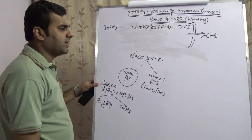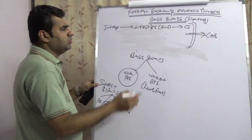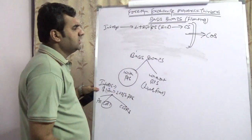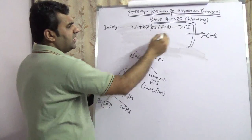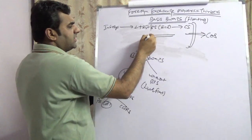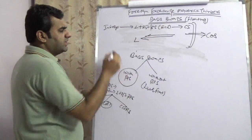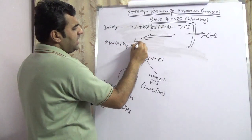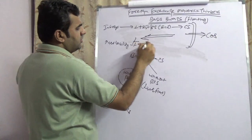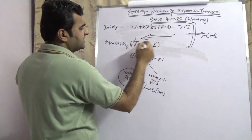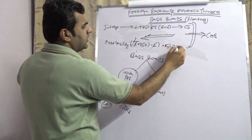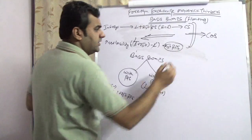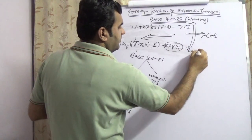In a coupon only swap, LIBOR is the floating element. Infosys will continue to pay LIBOR, and Credit Suisse will pay LIBOR back. So the LIBOR cancels out, and the net liability becomes LIBOR plus 250 minus LIBOR, which equals 250 basis points. This is an example of a basis swap where both sides have a floating rate with a basis point spread.